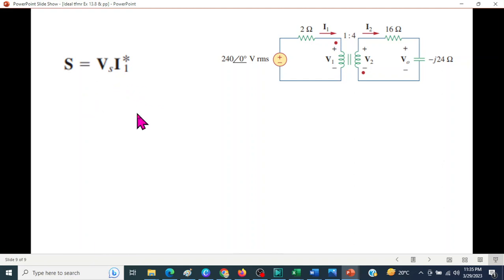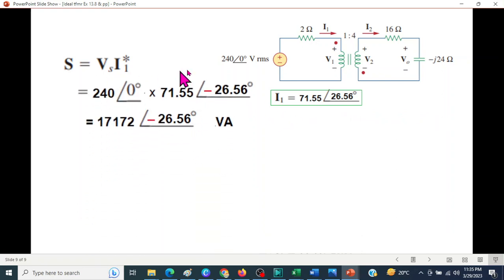Now, the power. Here also, we will just change this angle of I. 240 and 71.55. Changing the angle. This is the complex power. And converting into KVA, we get 17.172 angle minus 26.56 KVA.